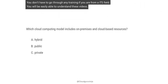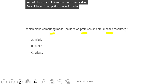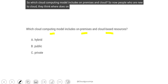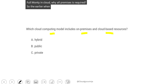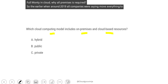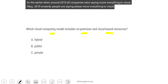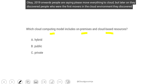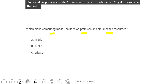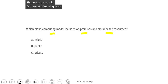Which cloud computing model includes on-premises and cloud? People who are new to cloud often wonder where on-premises comes into play — why is it required when we are going full cloud? Around 2019 onwards, all companies were saying move everything to cloud. But later, the first movers discovered that the cost of ownership and running things on cloud is very high.